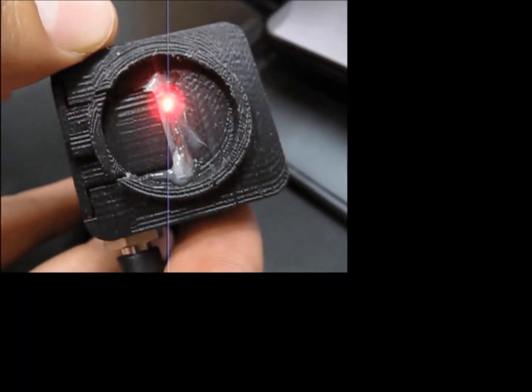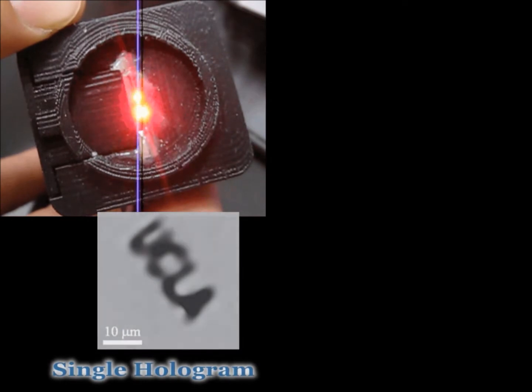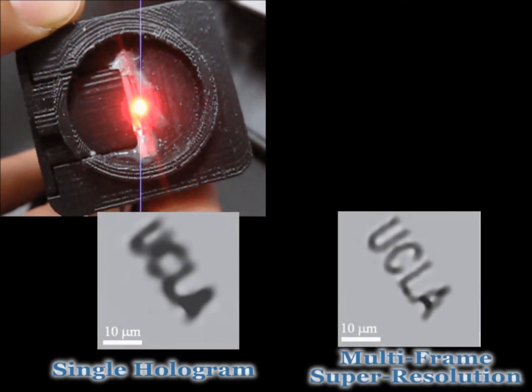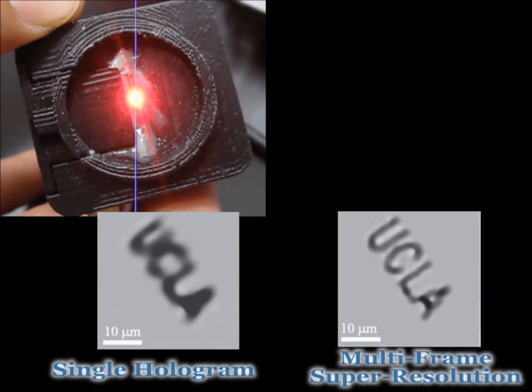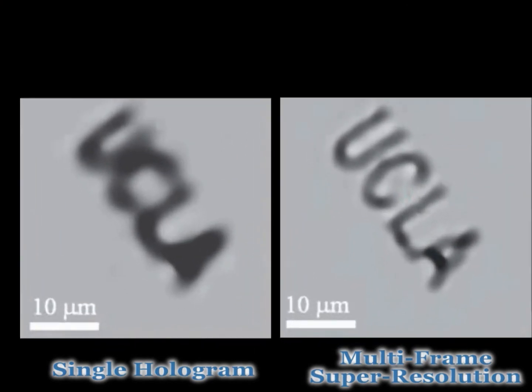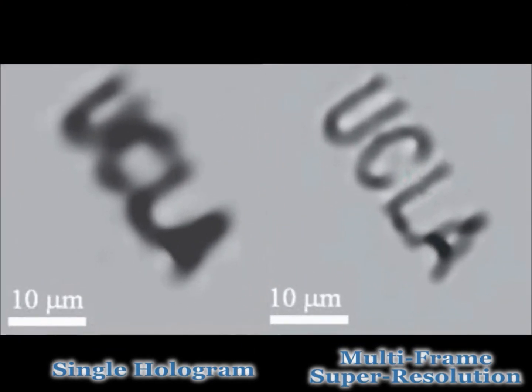The way we capture different holograms is by turning on different LEDs in our device. Each single hologram would give us the UCLA pattern image on the left, but combining them together with pixel super resolution gives the finer image on the right.